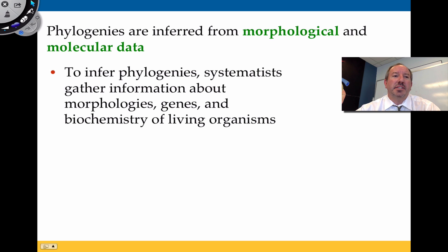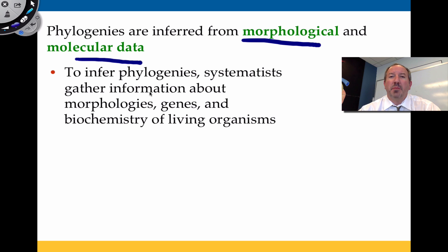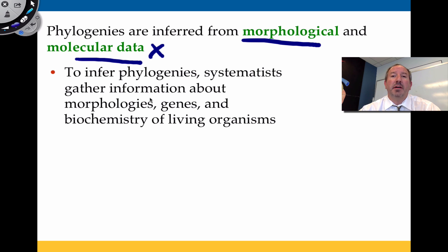I wanted to emphasize a couple things in this particular video: that morphological and structural kinds of traits are very useful in determining phylogenetic trees and determining life history, and molecular data such as amino acid sequences and DNA sequences — this being maybe the preferential one these days in the study of phylogeny — is what systematics scientists study and use to organize organisms into these trees.